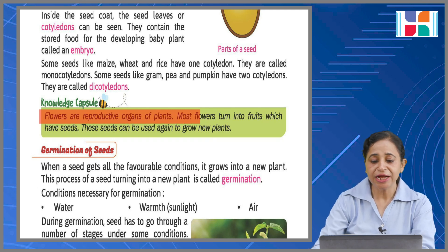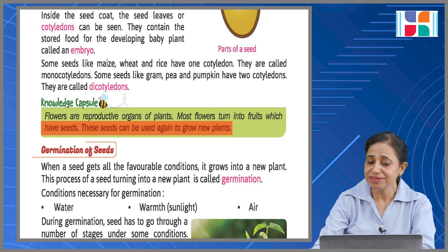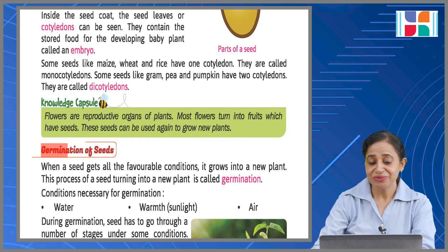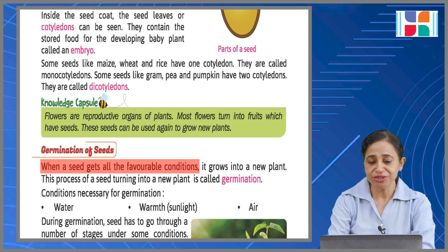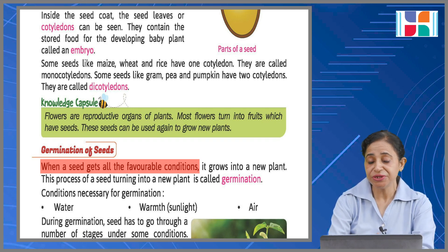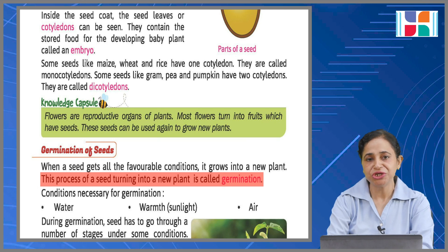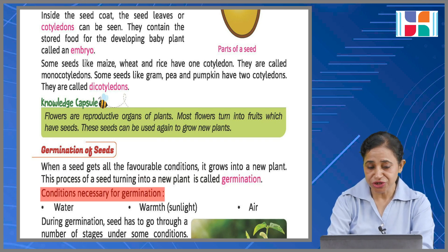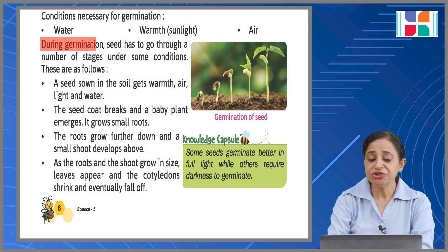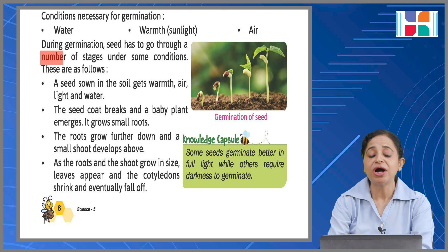Germination of seeds: when a seed gets all the favorable conditions — you've read what conditions are needed for germination — it grows into a new plant. This process of a seed turning into a new plant is called germination. Conditions necessary for germination: water should be there, warmth should be there, and sunlight. During germination, a seed has to grow through a number of stages under suitable conditions.